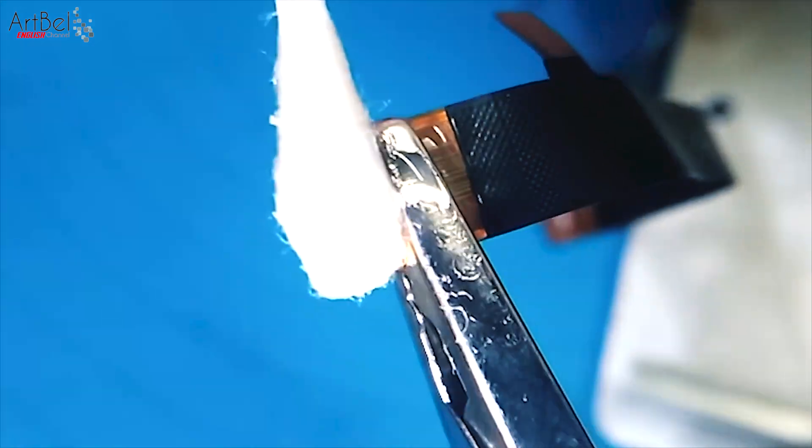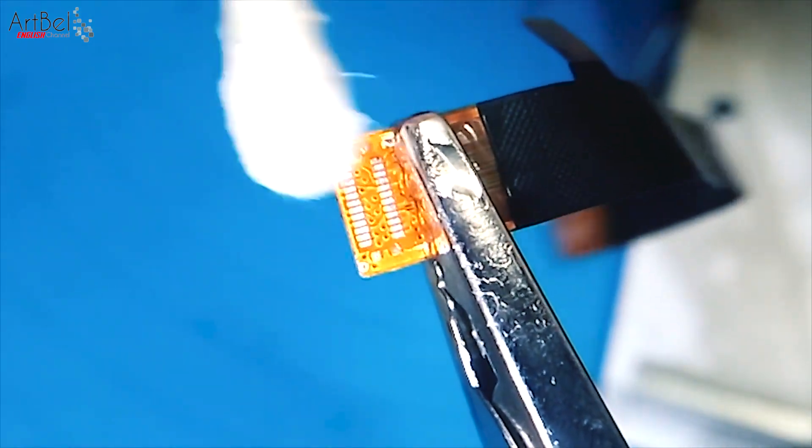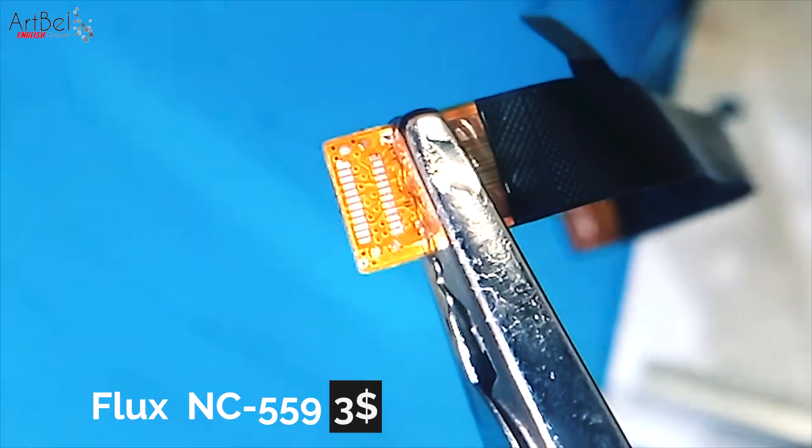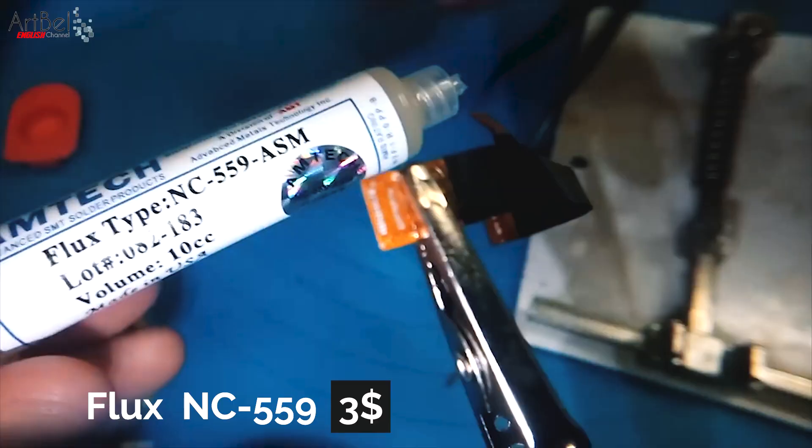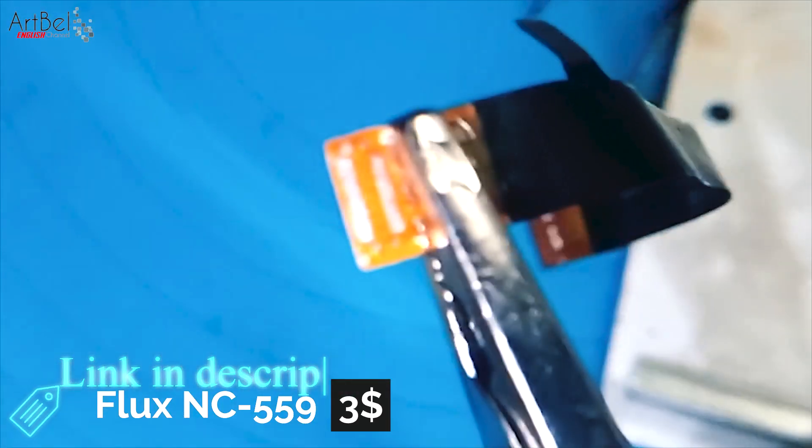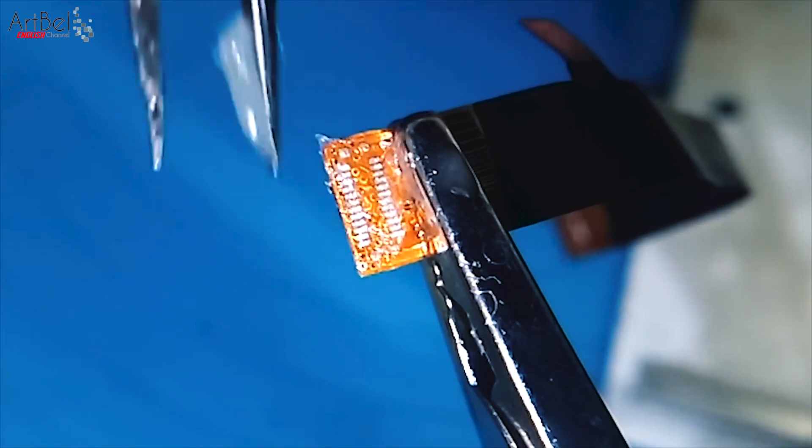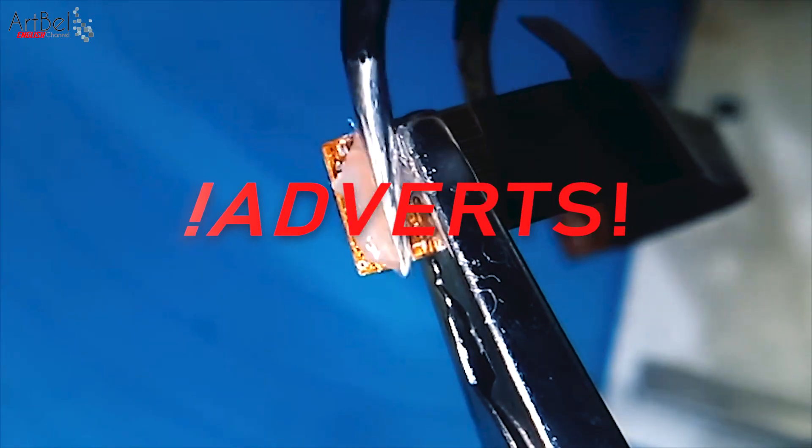Next clean flux on the contacts with alcohol. And apply a better quality flux. It will be easier for them. This is NC559 was bought in China. I will leave links to it and all the tools from the video in the description.